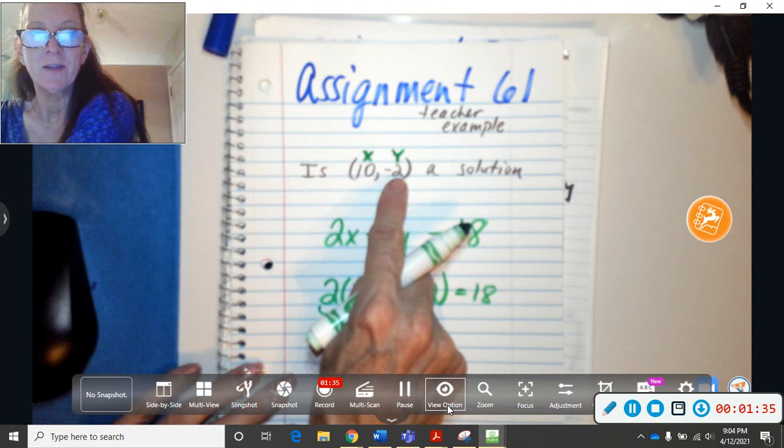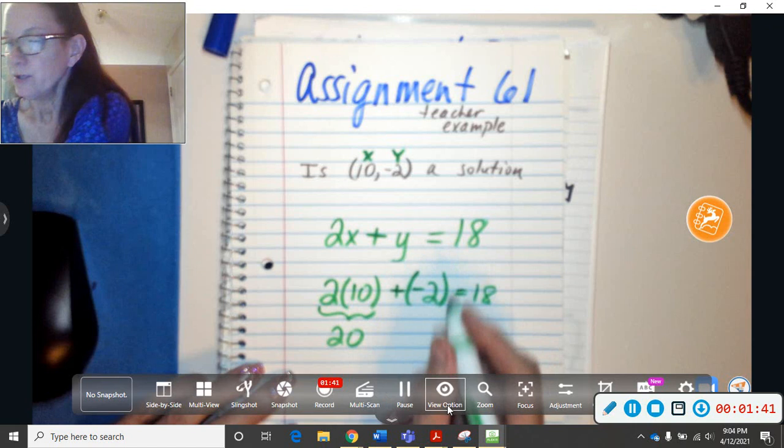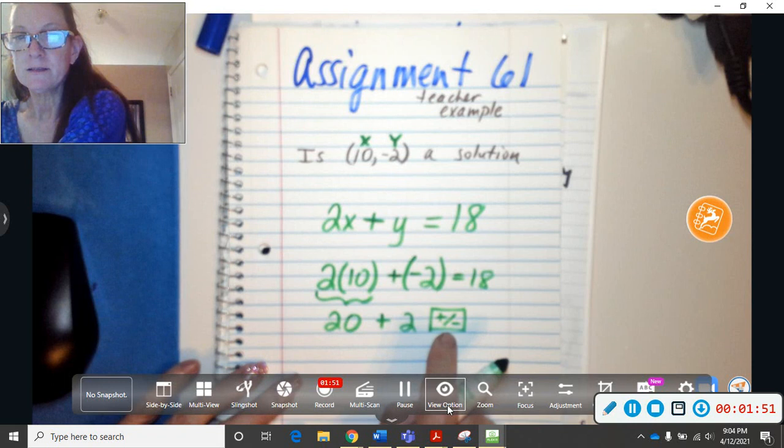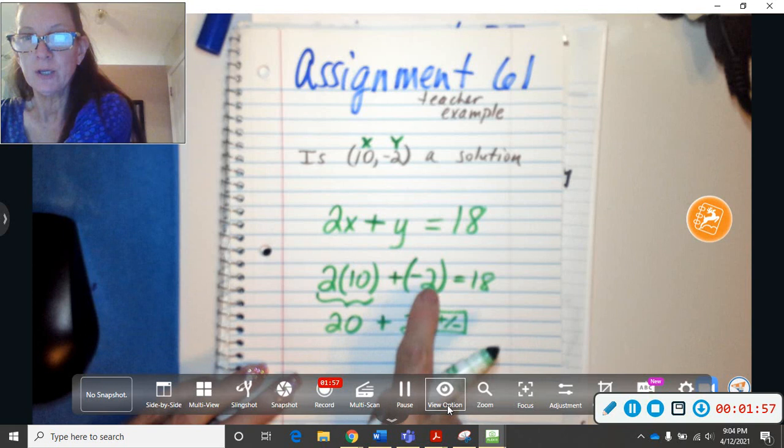So this is plus a -2. So in your calculator, you're going to do plus 2 and then make the 2 negative. So pay attention to your calculator. Don't use a subtraction sign anymore for a negative sign.